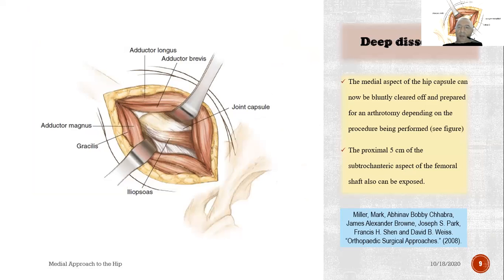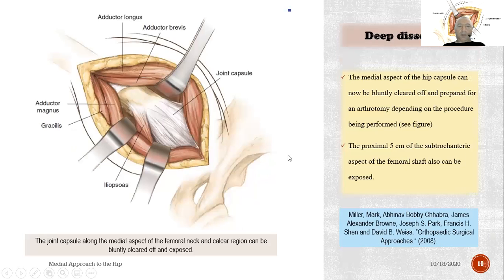Deep dissection: the medial aspect of the hip capsule can now be bluntly cleared of the periosteum for an arthrotomy, depending on the procedure being performed. Here I am showing the adductor longus; behind it on the deep side, the adductor brevis is retracted, revealing the iliopsoas, the lesser trochanter, the adductor magnus, and the gracilis. Gracilis is superficial; adductor magnus is deeper. The medial hip capsule can now be cleared for arthrotomy as needed.